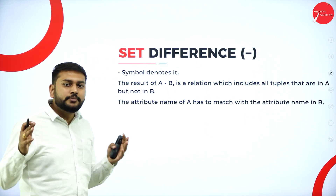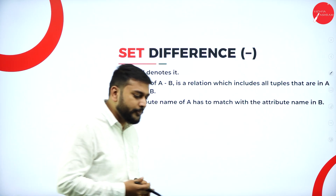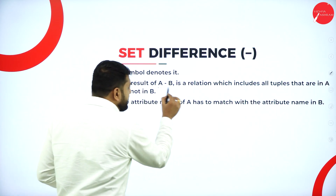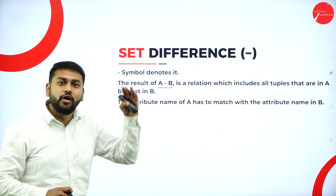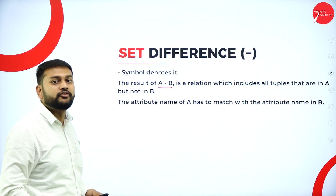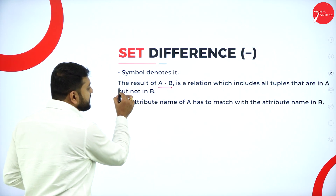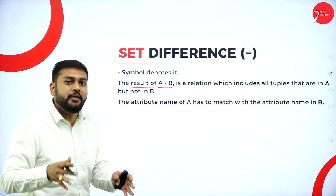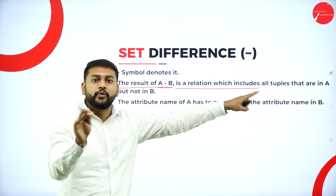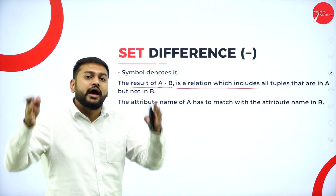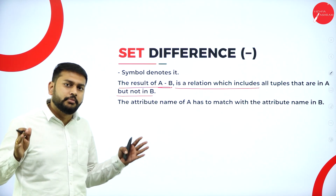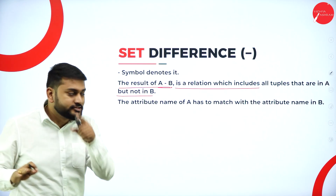Moving forward to set difference. When it comes to set difference, this is not a unary operation — I need two relations, A and B. When I perform A minus B, I will include all the tuples that are in A but which are not in B, I will remove. The result of A minus B is a relation that includes all the tuples in A, but those which are also in B will not be included in the result. That is the meaning of set difference.